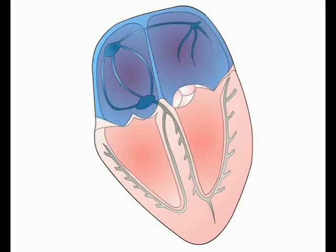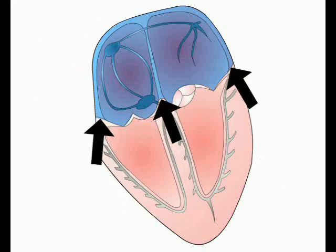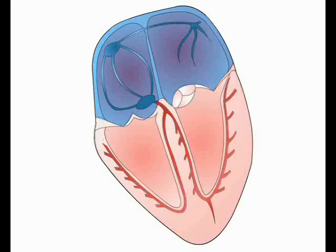The atria and ventricles however are separated by a non-conducting fibrous septum. The depolarization wave cannot penetrate this barrier, and in order to activate ventricular contraction, the wave must be transmitted into the ventricles by the specialized cardiac conducting system.